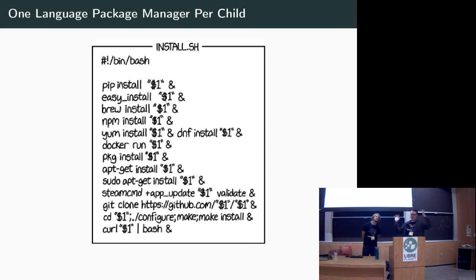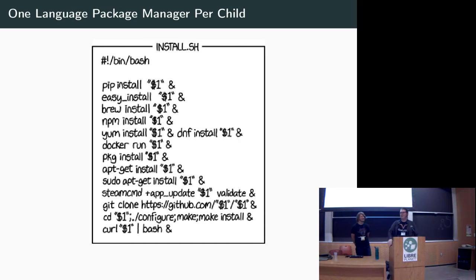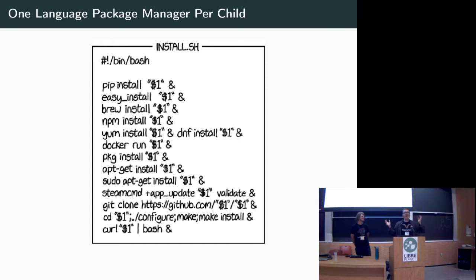We're now in the world of one language packager per child. Every language wants to be cool now — Go, Rust, whatever — and they all want package managers. You know what it's like to run a modern project where you have Python packages working with core Debian or Fedora packages, then you've got JavaScript things and you're not sure whether to check those into Git — so you use NPM, and now you've got Bower, and now you have to become an expert in every single one of these systems. It's terrible. This is not a great state of the world.